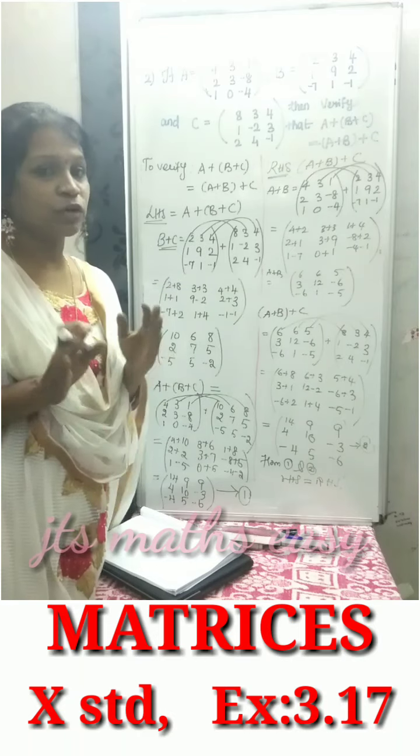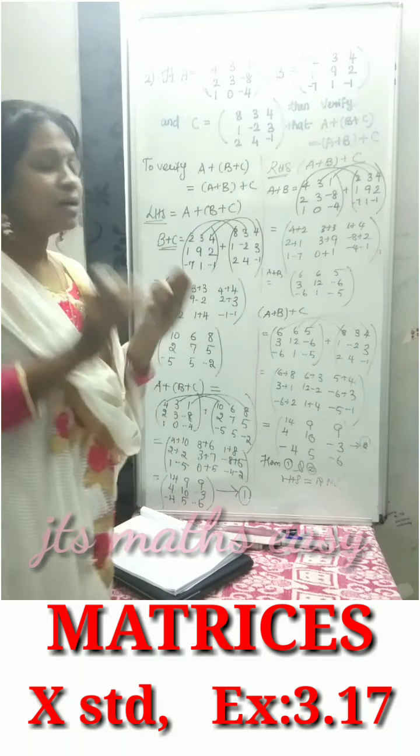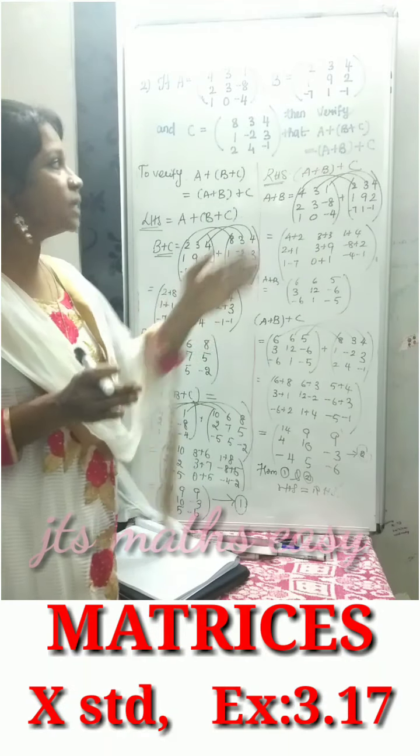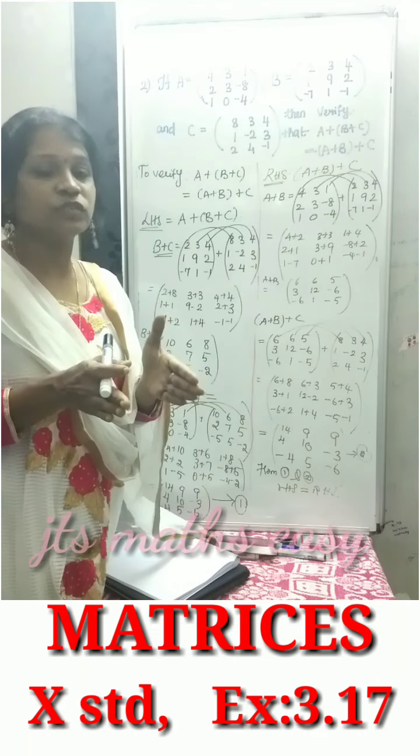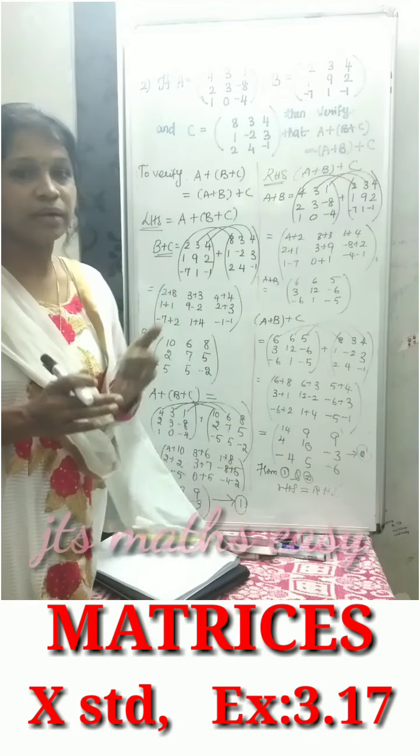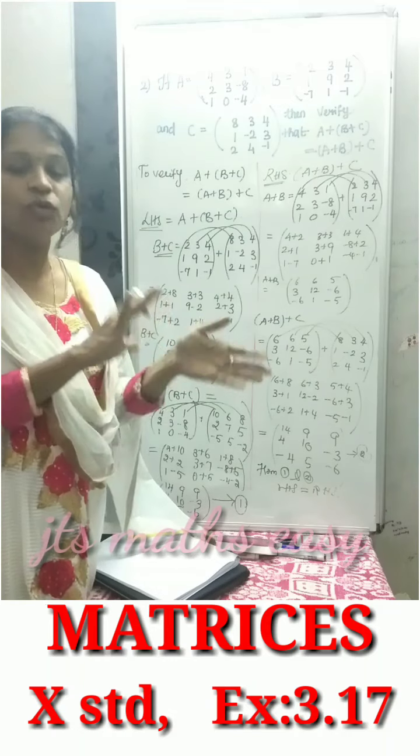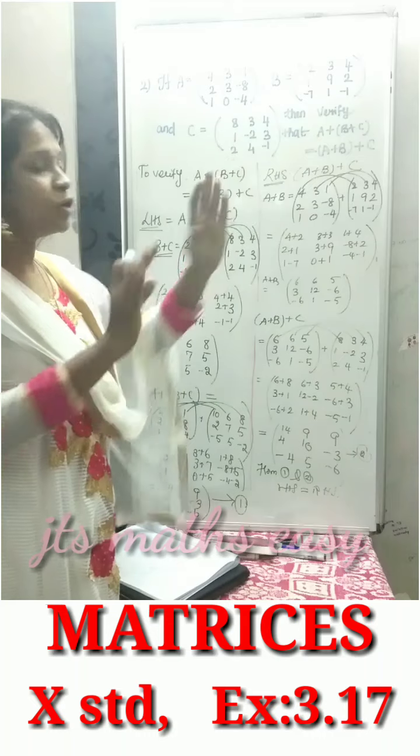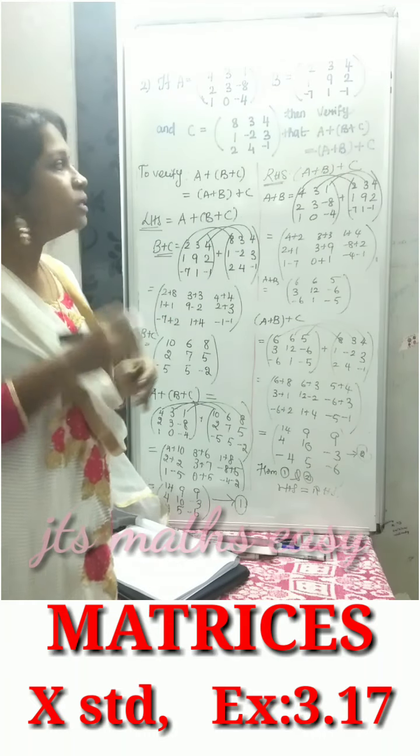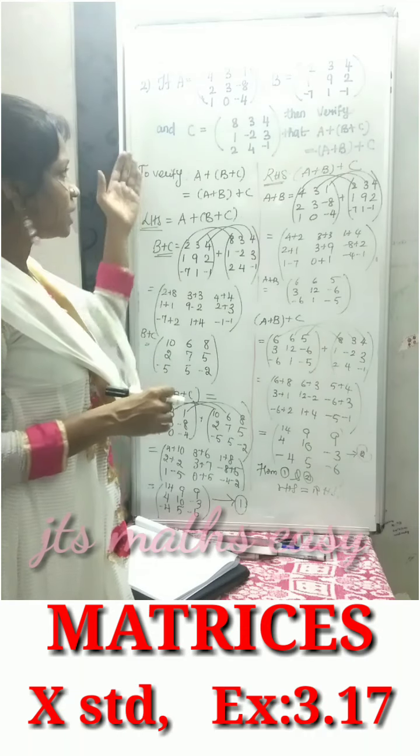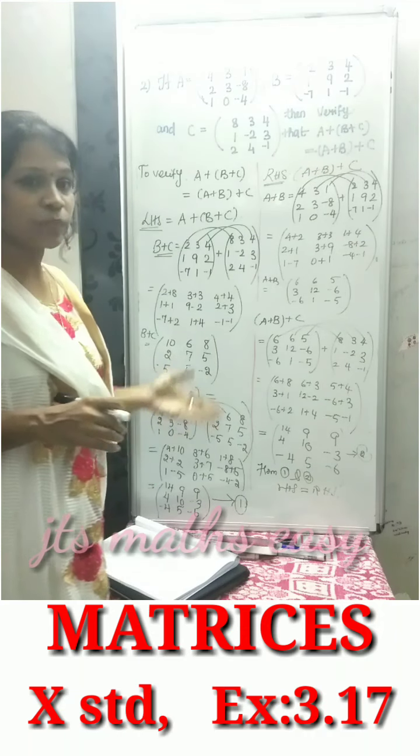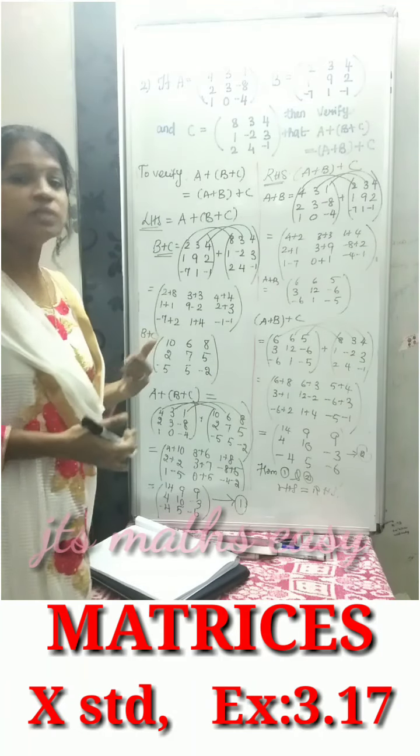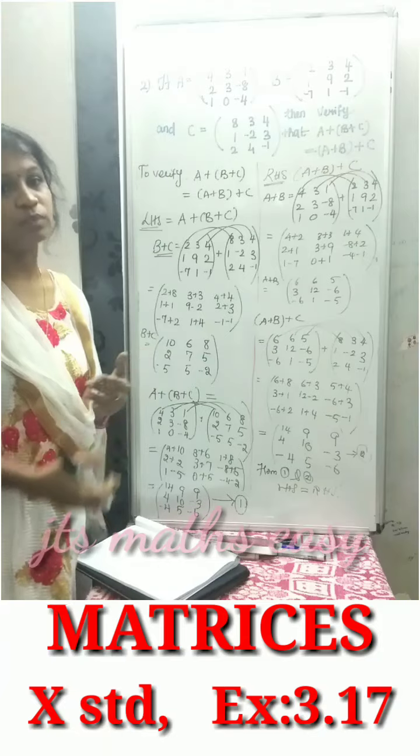This is how to verify addition problems. Look at what is given in the problem. First find out the LHS. If brackets are given, solve them first. Then add, multiply, or do whatever operation according to the problem. This is very important. If you add the wrong positions, you'll get wrong answers. This is a very important point. What we verified here is the associative property. In the next videos, I will teach you the remaining problems. Thank you.